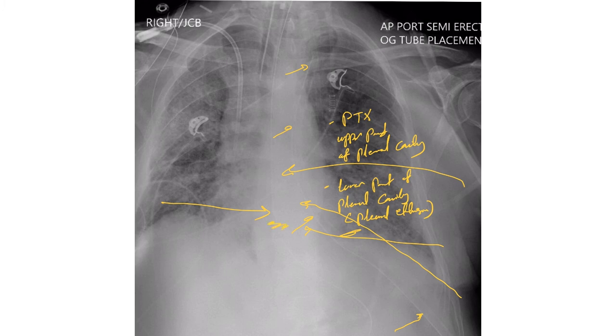outside the chest cavity but still in the subcutaneous tissue. At that point you will see subcutaneous emphysema. Also, one important thing you need to pay attention to: the holes, the fenestrations in the chest tube—they all need to be inside the chest.